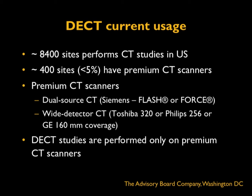Among those 8,400 sites, only about 400 — less than 5 percent — have premium CT scanners. By premium CT scanners, I mean dual source CT such as the Siemens Flash and Force, and wide detector CT such as Toshiba 320, Philips 256, or GE 160mm coverage scanners, which are suitable for performing dual energy CT studies.